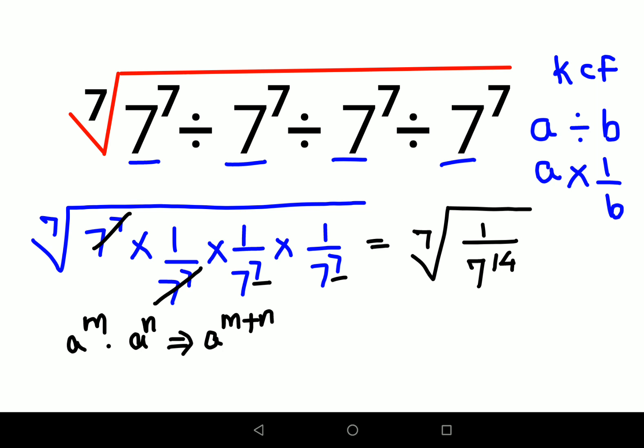Now another thing you need to realize is that whenever you have an nth root, it can be written as A raised to 1 by n. So using the same logic, I can write this as 1 upon 7 raised to 14, the whole raised to 1 by 7.